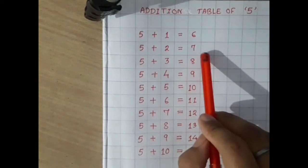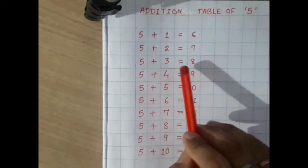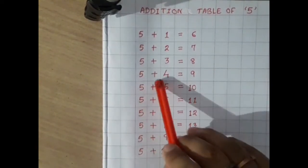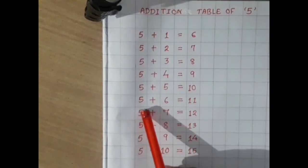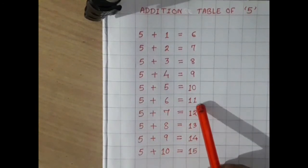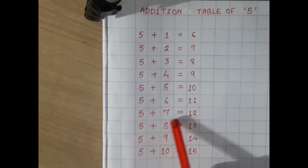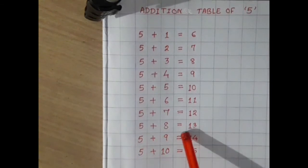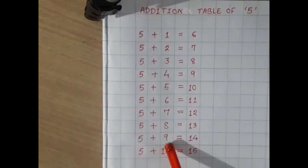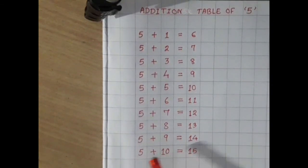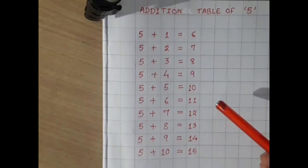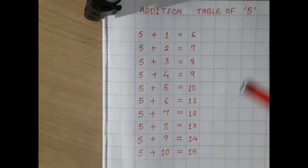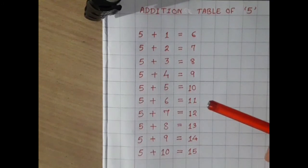Five plus one equals six, five plus two equals seven, five plus three equals eight, five plus four equals nine, five plus five equals ten, five plus six equals eleven, five plus seven equals twelve, five plus eight equals thirteen, five plus nine equals fourteen, and five plus ten equals fifteen. In this way you can learn. Thank you so much, students.